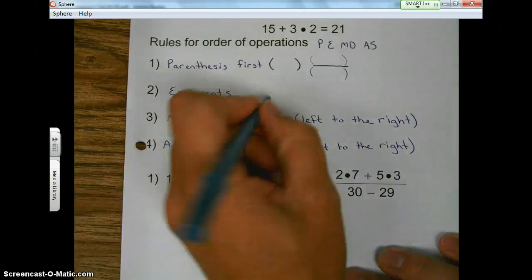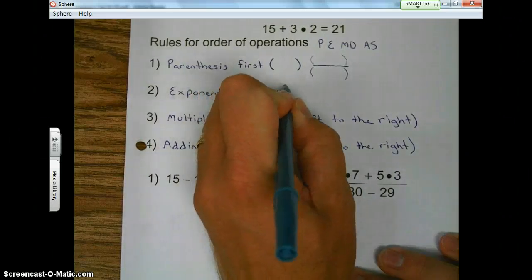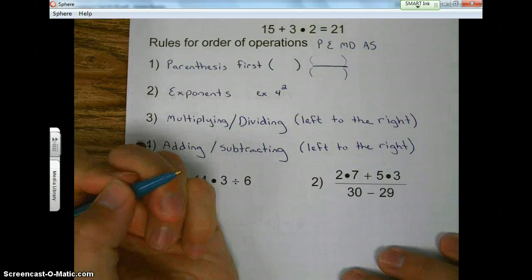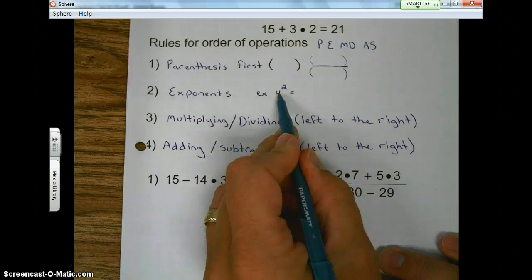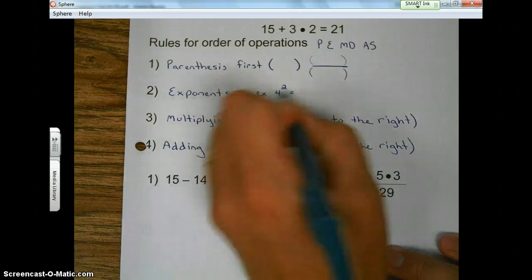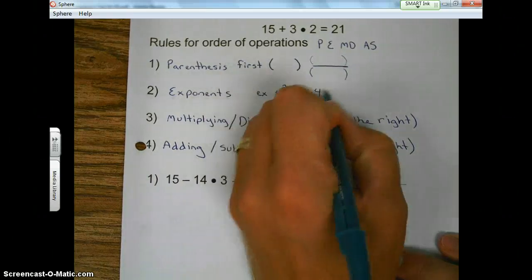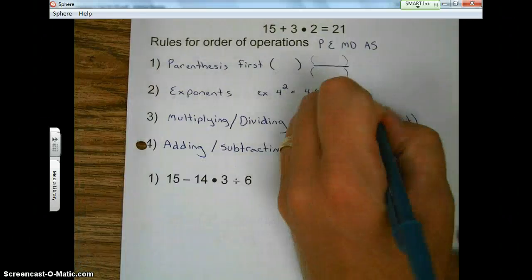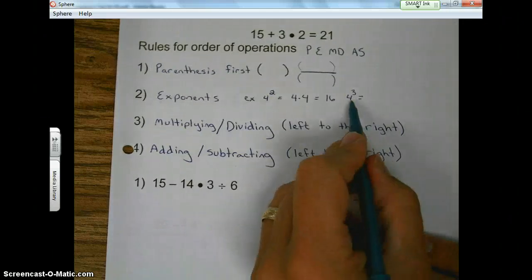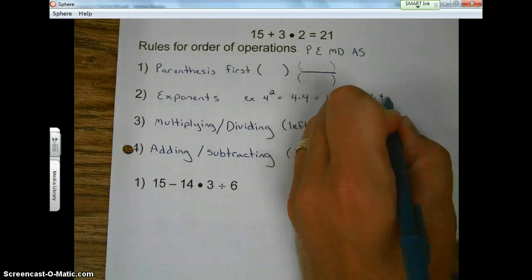Remember that exponents are those little numbers, those powers that we raise a number to? For example, four squared. Remember, this number tells us how many times to multiply this number times itself. So it says to take the four times itself twice. So four times four is 16. Okay, if it was four to the third power, we're going to multiply four times itself three times. So four times four times four.